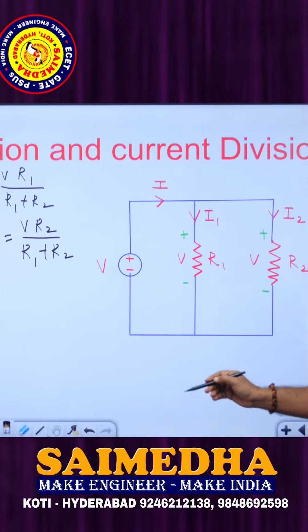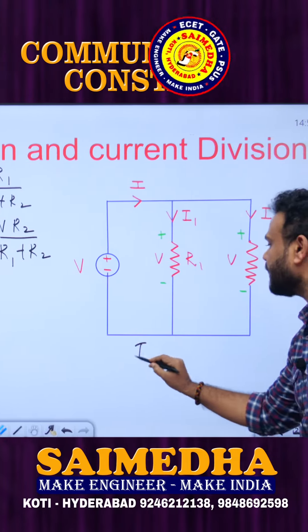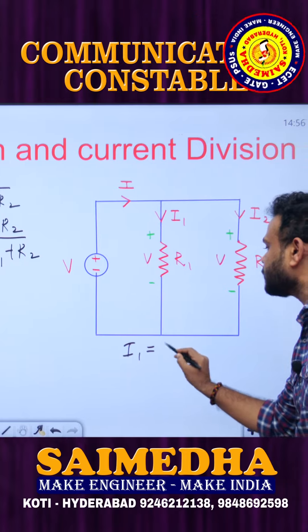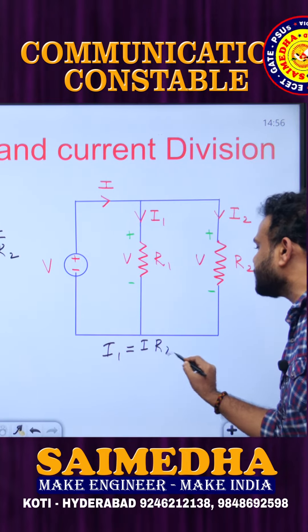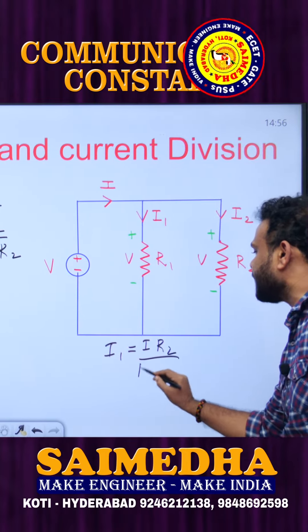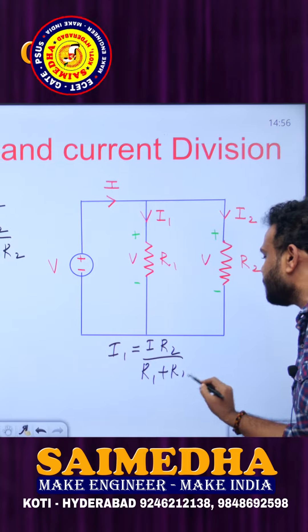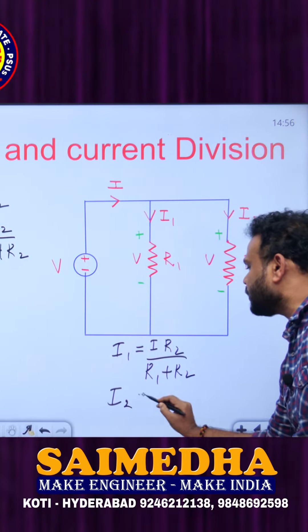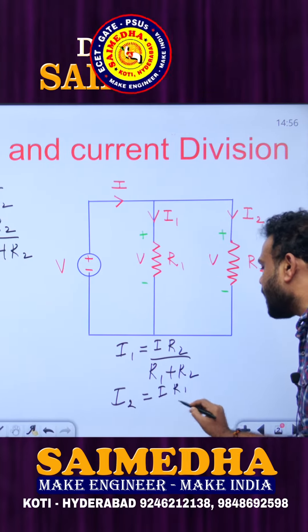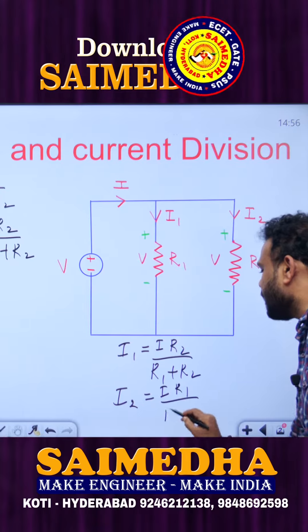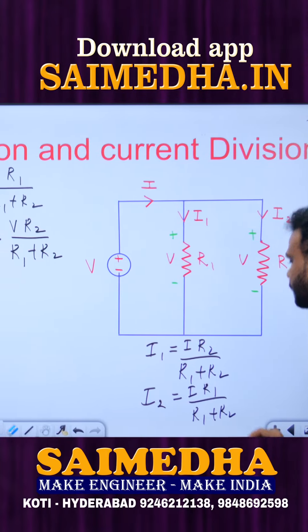In the parallel circuit, the value of current I1 is equal to the total current multiplied by the opposite resistance R2 upon R1 plus R2. Similarly, I2 is equal to the total current multiplied by R1 upon R1 plus R2.